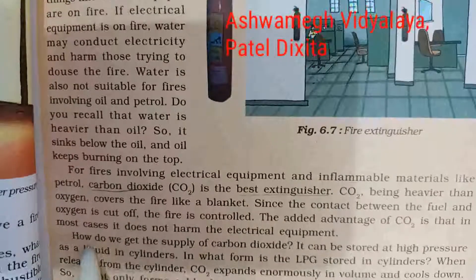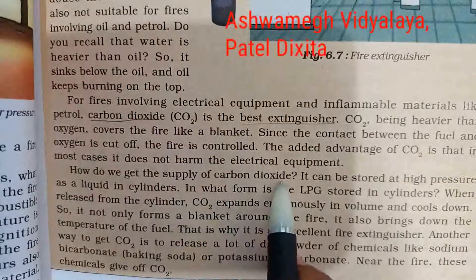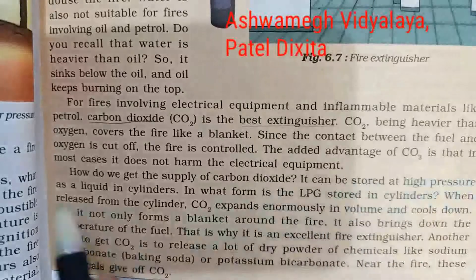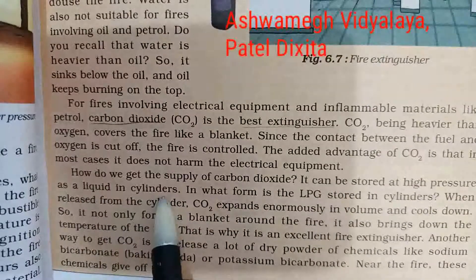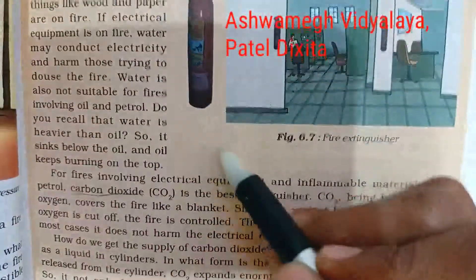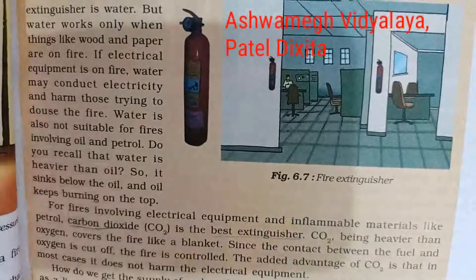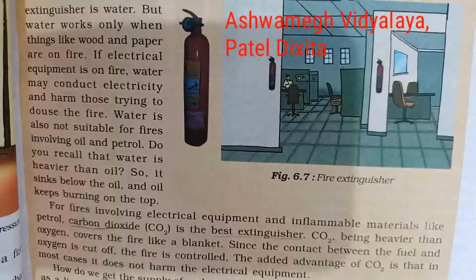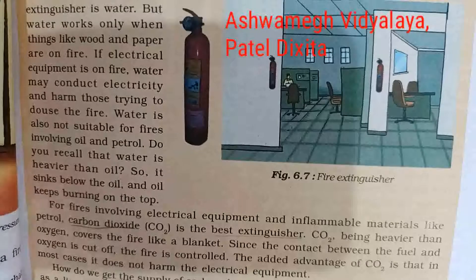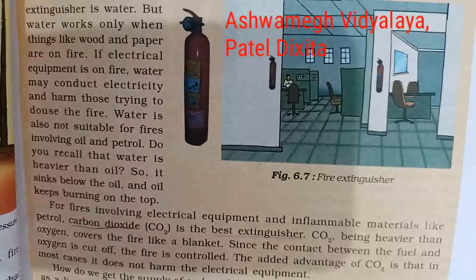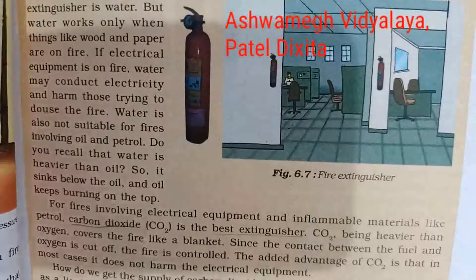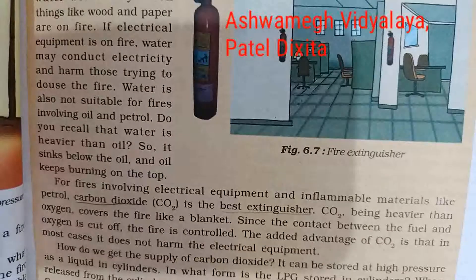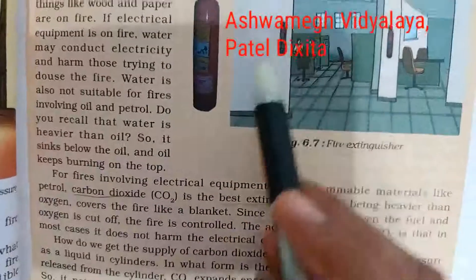How do we get the supply of carbon dioxide? It can be stored at high pressure as a liquid in cylinders. Friends, you must have seen these red colored cylinders in schools, offices, apartments, government areas like hospitals, clinics, tuition classes — you have seen these types of cylinders everywhere.